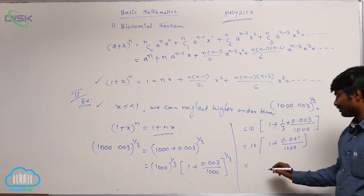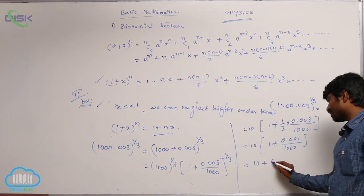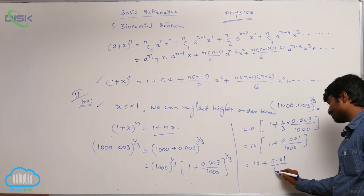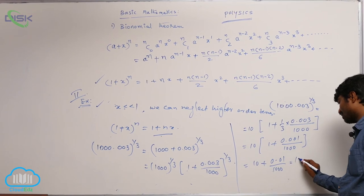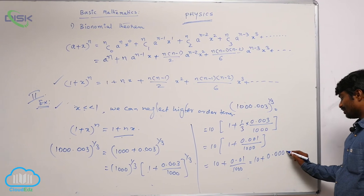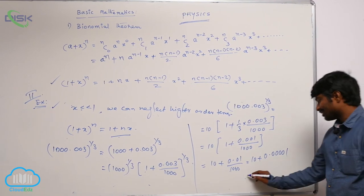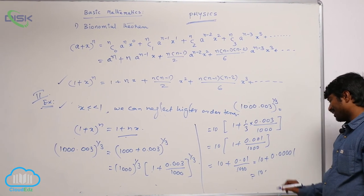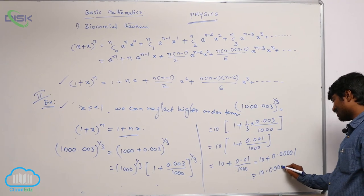And you multiply, 10 plus 0.001 by 1000, that is equal to 10 plus 0.00001, that is equal to 10.00001.